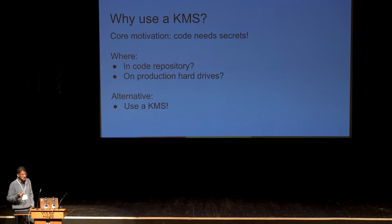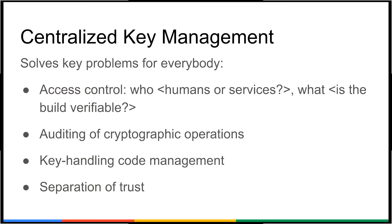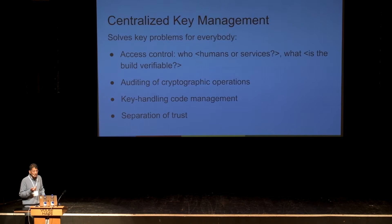The best alternative we've settled on is a centralized key management system where we use our identity and system identity management system, along with our Borg scheduling system, to manage who gets access to these keys. This allows you to solve this problem once for everybody. You can decide who gets access — is it humans, is it services? Many of our keys are restricted only to services that are verifiably built; humans will never see these keys. It's a single choke point for auditing, logging, and control, and it minimizes the amount of code that needs to deal with keys. The separation of trust means we can exclude even lower-level storage systems from having access.